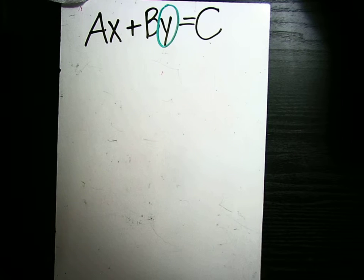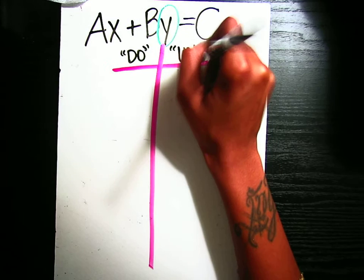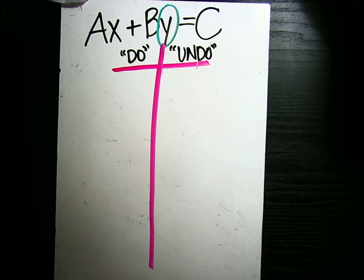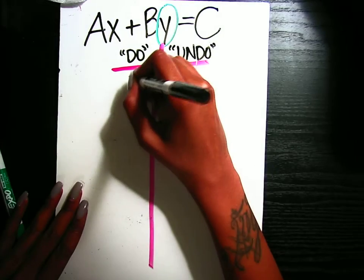So just like we did on the previous example, I'm going to set up my chart. Do-undo chart of the equation. So starting with Y, because that's what we're solving for.